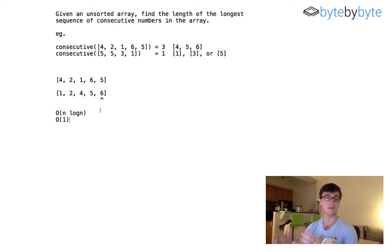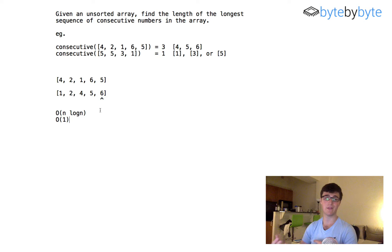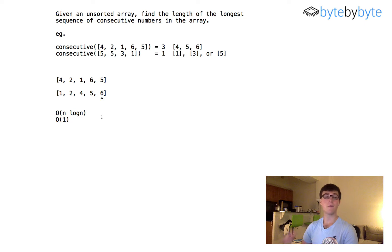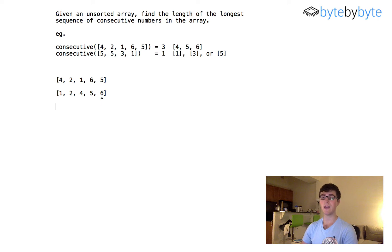One downside is that you are modifying the input, so depending on the circumstances you might have to create a copy of the array and sort that, which would mean O(n) space. So let's think — maybe we can do this faster. If we're using O(n) space anyway, we can do better using a data structure that lets us look up values in constant time: a hash set.